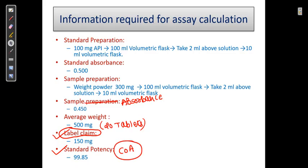Let's see standard preparation. We have taken 100 milligram of API or working standard into 100 ml volumetric flask. From that we have taken 2 ml and transferred it into a 10 ml volumetric flask.